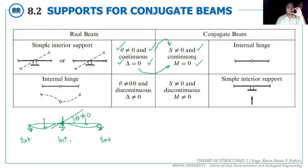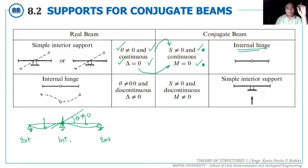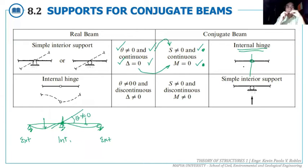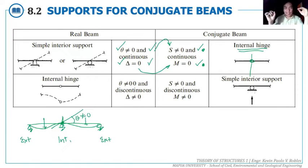For an internal hinge in the real beam, the slope is not zero and the deflection is also not zero. So in the conjugate beam, both shear and moment are non-zero. What joint type has both non-zero shear and non-zero moment? That is an interior support — when you cut the member there, shear force and moment both appear. Therefore, an internal hinge on the real beam converts to an interior support on the conjugate beam.